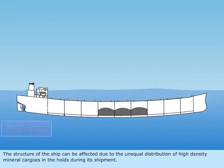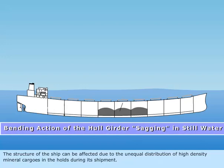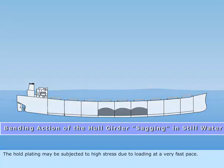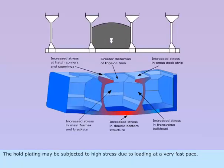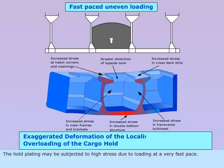The structure of the ship can be affected due to the unequal distribution of high-density mineral cargoes in the holds during its shipment. The hold plating may also be subjected to high stress due to loading at a very fast pace.